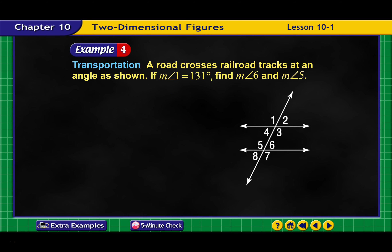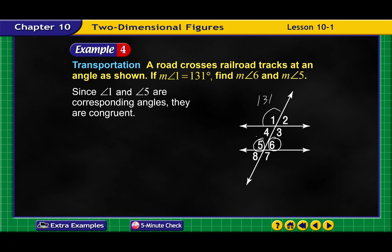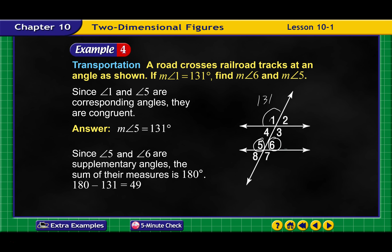A road crosses the railroad tracks at an angle where angle 1 is 131 degrees. Find the measure of angle 6 and the measure of angle 5. Angle 1 and angle 5 are corresponding angles, so they are congruent — the measure of angle 5 is 131 degrees. Since 5 and 6 are supplementary angles on a straight line, they equal 180. So we subtract 131 from 180 and get the measure of angle 6 is 49 degrees.